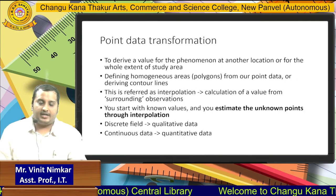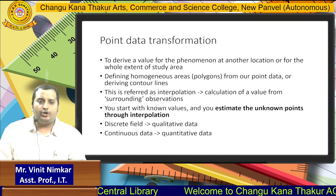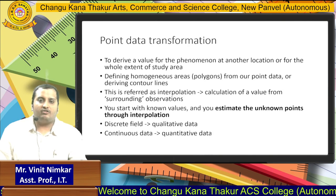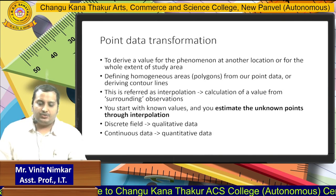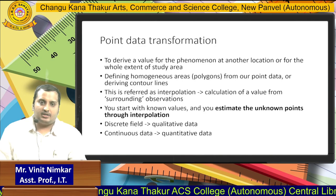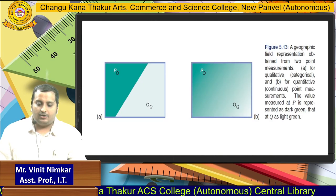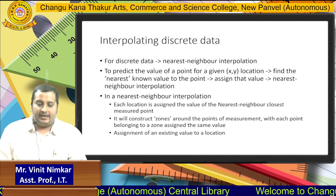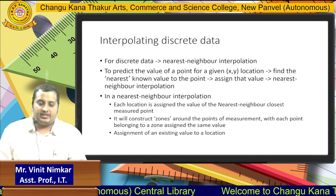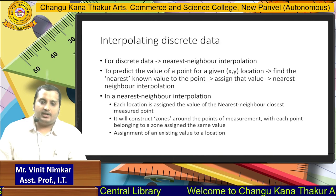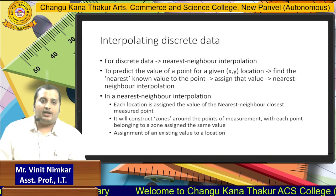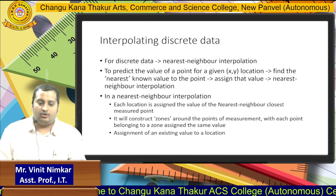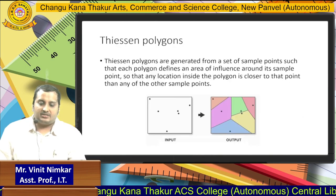Point data transformation: if we do not know the exact location of a particular point, we can use different point data transformation methods to find those unknown values. As seen in the interpolation of discrete data, the main function used is nearest neighborhood. The nearest neighborhood function helps us find the value of an unknown point in a map based on the nearest known value of a point. The same principle applies to Thiessen polygons.